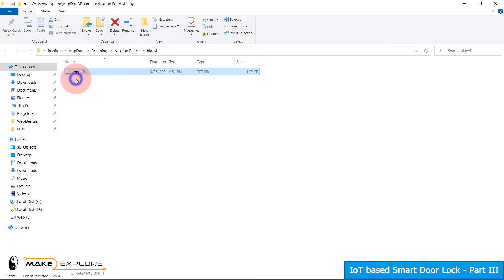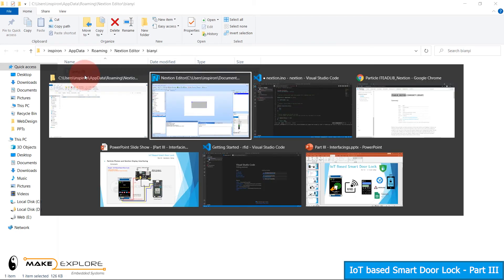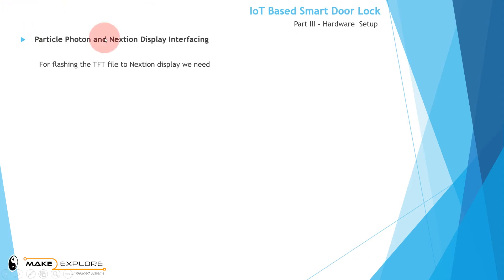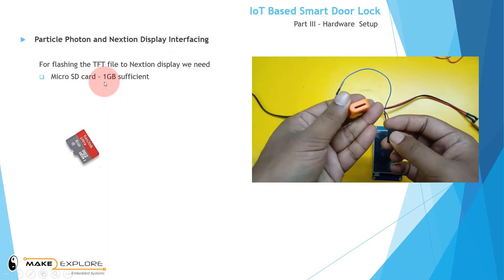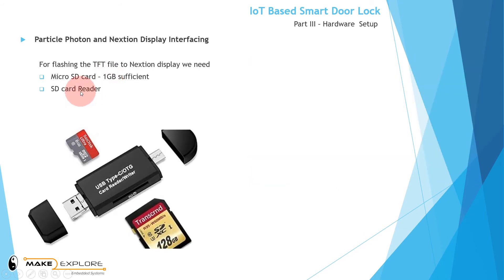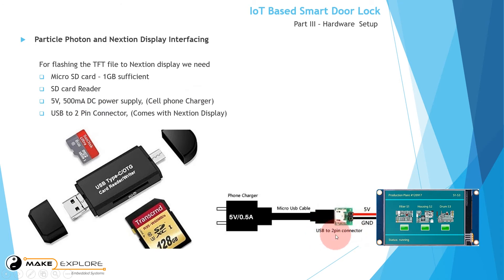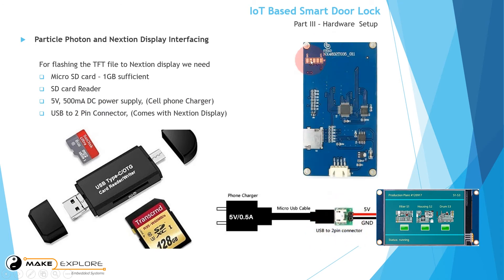This is the file you have to flash into the display. For that you will need an SD card, or you can use a TTL serial module, but we recommend the SD card method. For flashing the TFT file into the Nextion display you need these components: a micro SD card (1GB is sufficient), an SD card reader, a 5V 500mA power supply (you can use a phone charger with the same rating), and a USB to two-pin connector which usually comes with the Nextion display. The rear side of the Nextion display has a slot to insert the micro SD card.